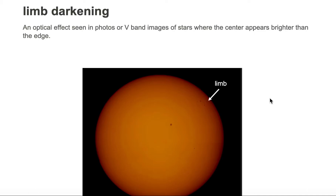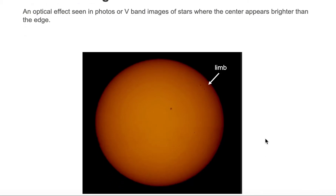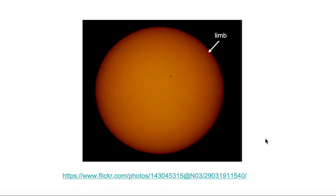Limb darkening is an optical effect seen in photos or v-band images of stars where the center appears brighter than the edge. If you look closely at the center of this image of the Sun, it appears quite bright, but when you look at the edge, you notice how dark it is — more like a darker brown.